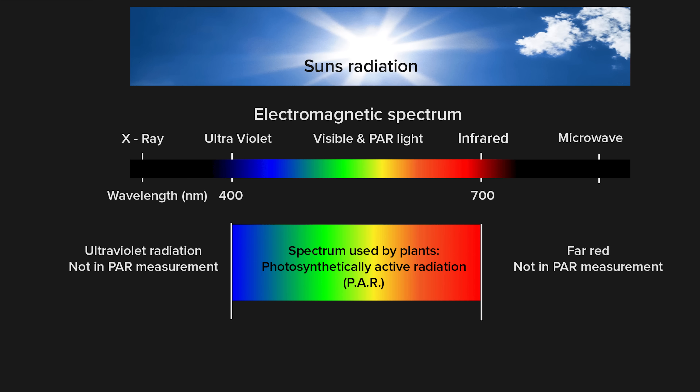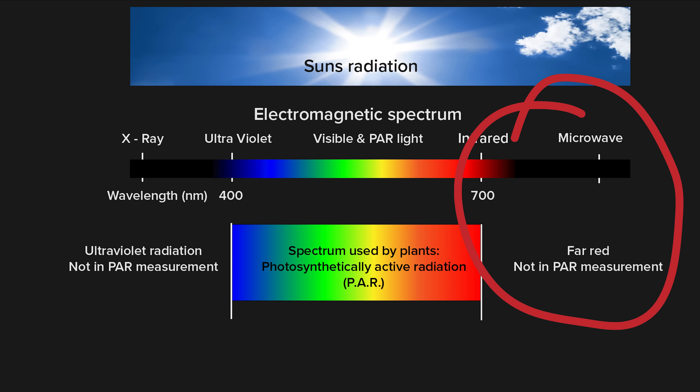Far red is part of the electromagnetic spectrum radiated by the Sun, also present in some man-made grow light sources. It's not considered part of the PAR range nor the visible light spectrum, so it's a very dull red, not really visible to the eyes and not measured as part of PAR - the normal measurement of useful light to grow plants. The reason for this is generally it wasn't considered to be photosynthetic.